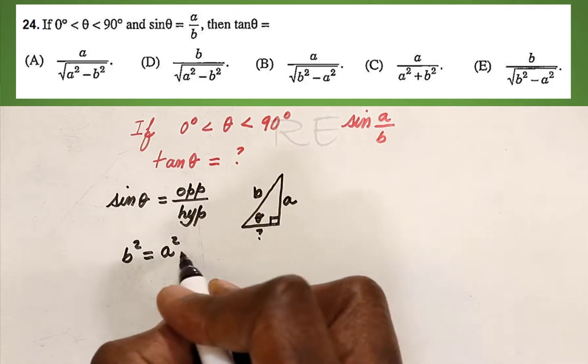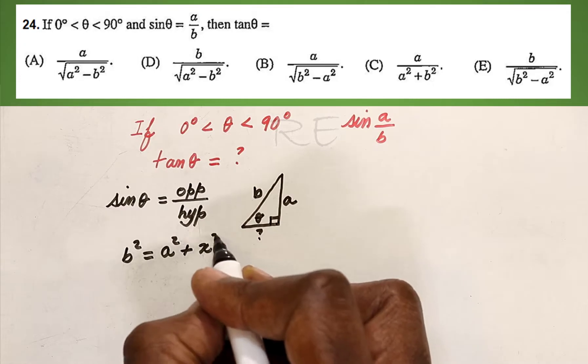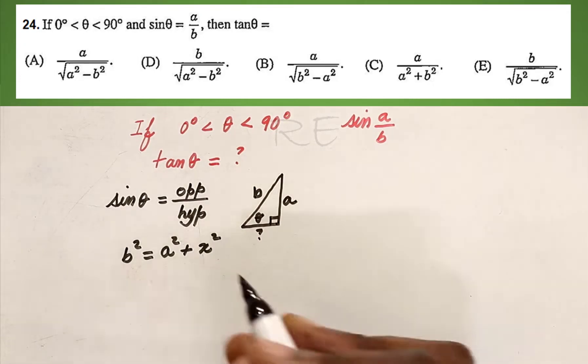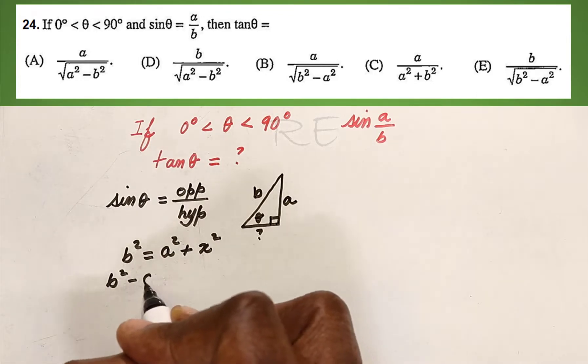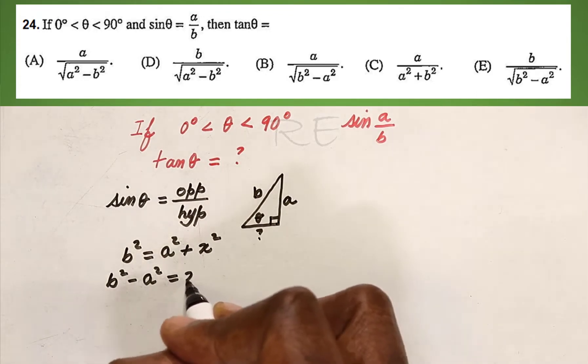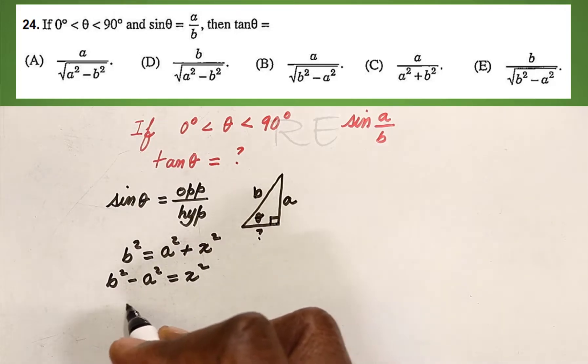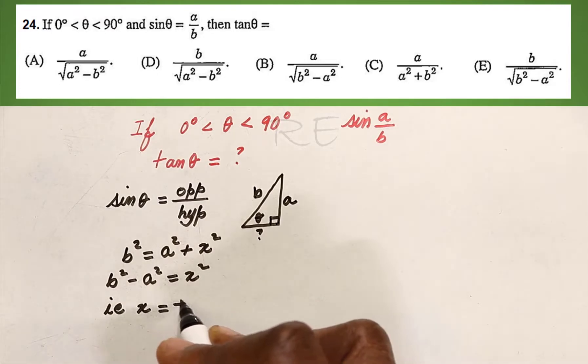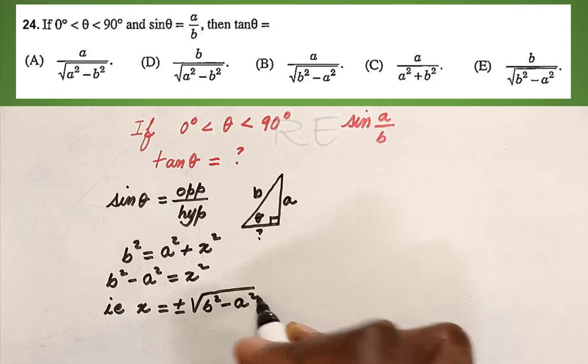According to the Pythagorean theorem, B squared is equal to A squared plus the missing leg, we're going to call it X squared. So B squared minus A squared is equal to X squared when we subtract A squared from both sides. And X is equal to plus or minus square root of B squared minus A squared.